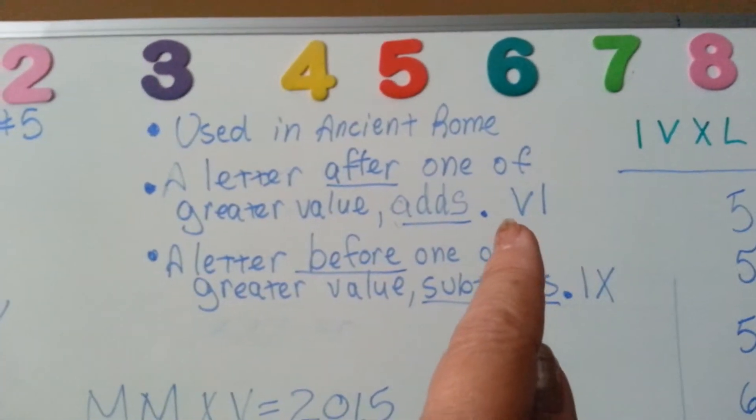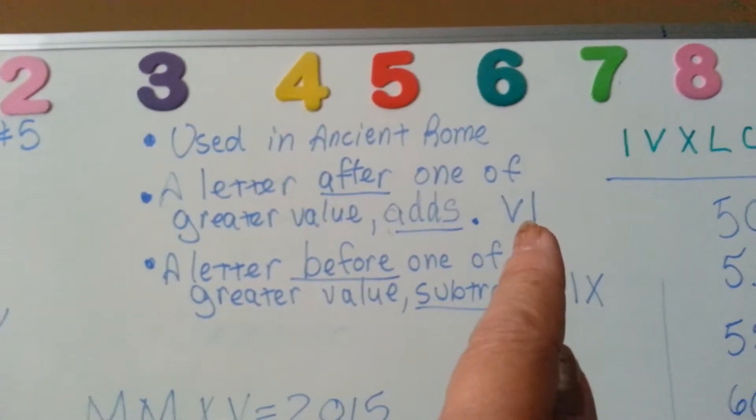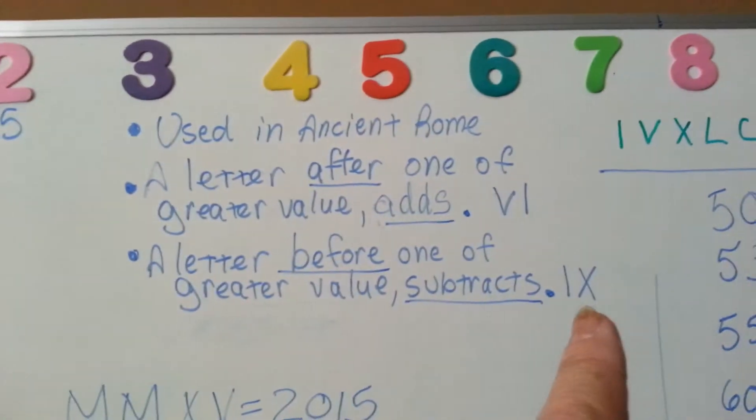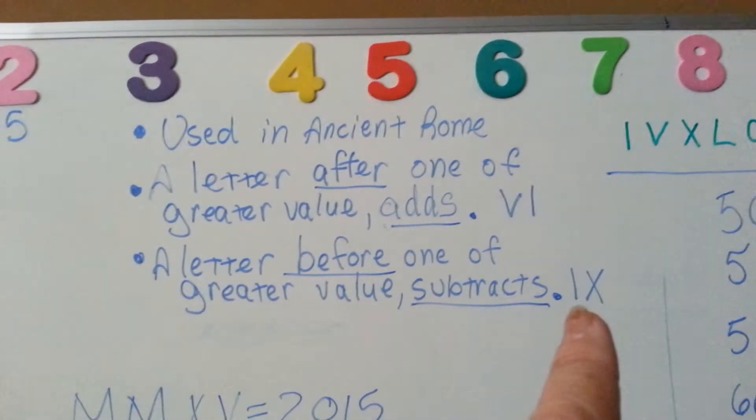So whereas a V means 5, if you put an I after it, it becomes 6. X means 10. If you put the I before it, it becomes 9.